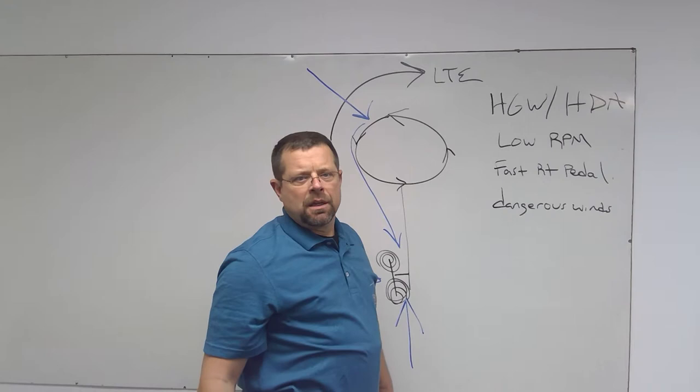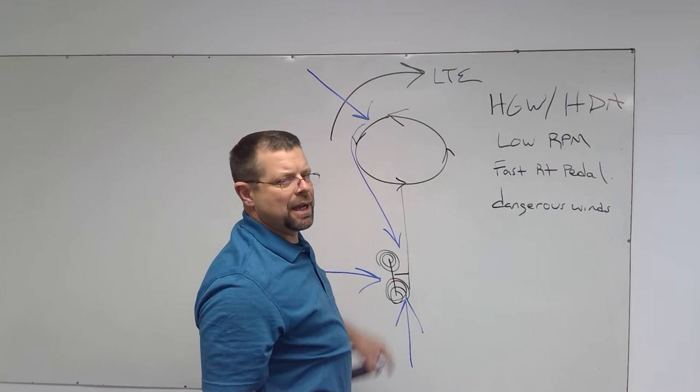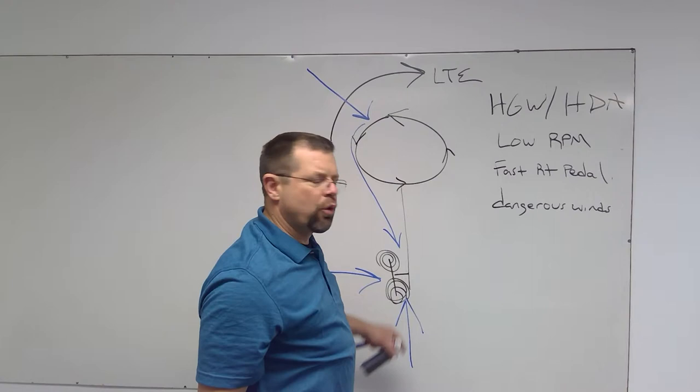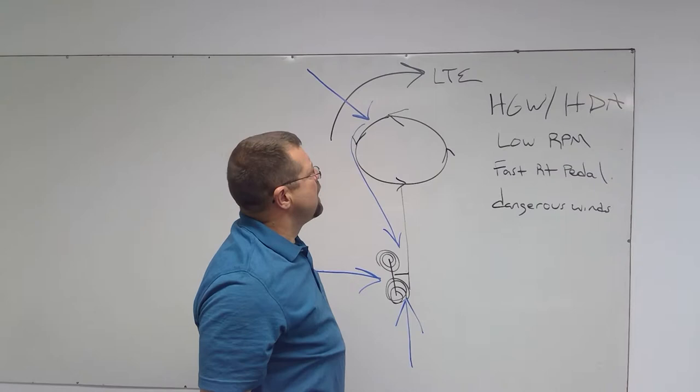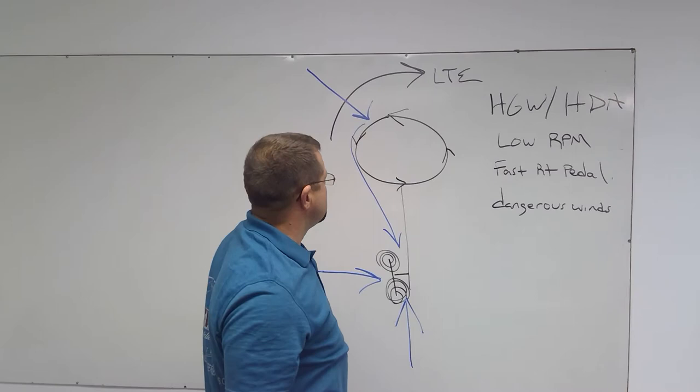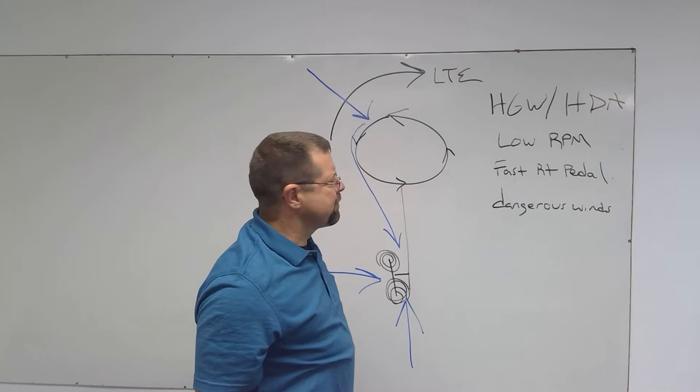Training helicopters have one power plant operating both the tail rotor and the main rotor system. If you allow the RPM to drop, you will not have the tail rotor authority and it could induce loss of tail rotor effectiveness. High gross weight, high density altitude speaks for itself. We will talk about how density altitude affects performance in another video.